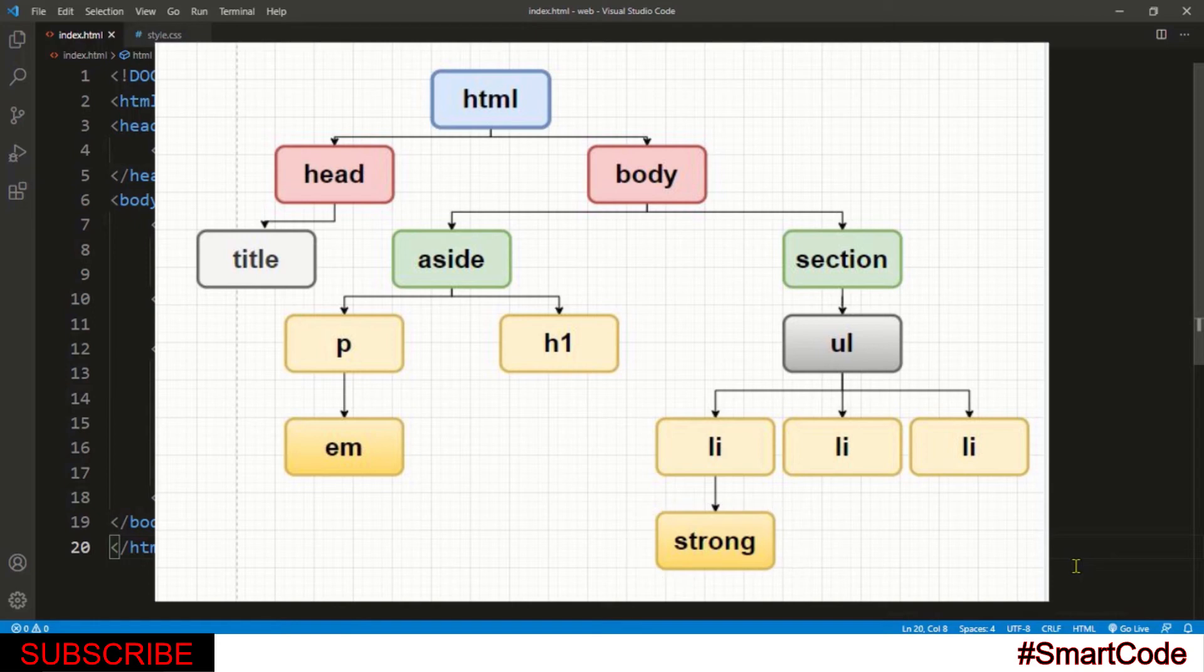So let's now try to locate siblings. Siblings are at the same level in the family tree with the same parent. Now from the top in the family tree, the body and the head tag are siblings as they have common parent HTML.